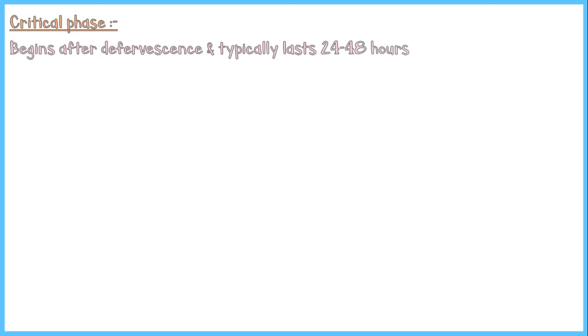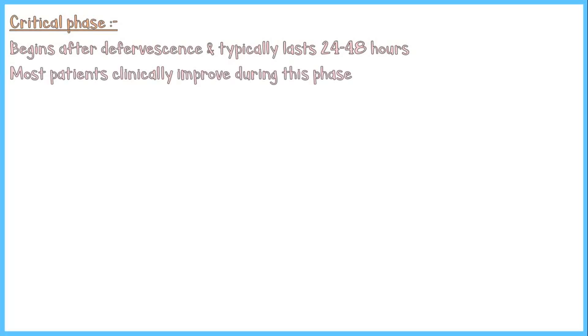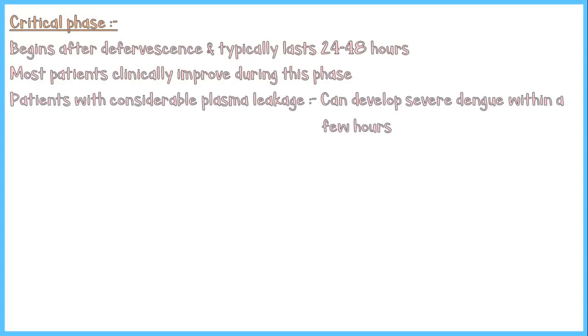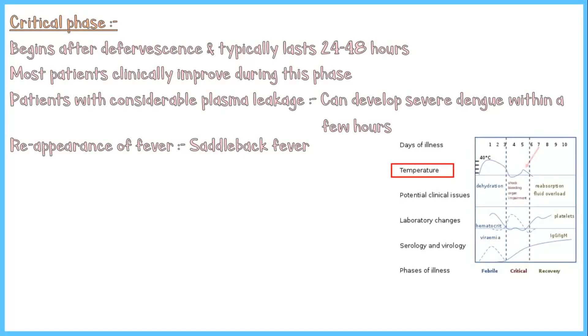The critical phase begins after defervescence and usually lasts for about 24 to 48 hours. Most patients clinically improve during this period. However, some patients with considerable plasma leakage can develop severe dengue within a few hours. In these patients, fever starts to reappear — a pattern known as saddleback fever or biphasic fever, as shown in the graph.